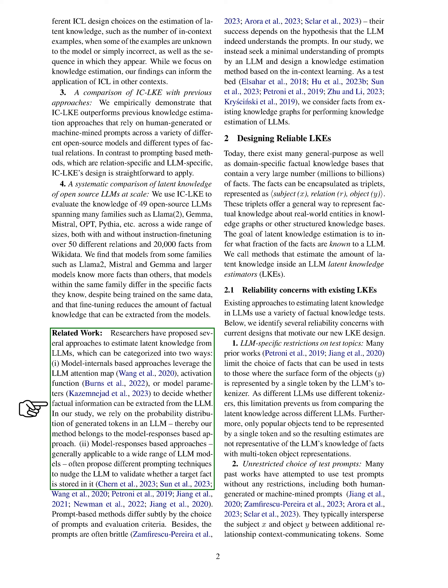Model responses-based approaches often use different prompting techniques to verify if a target fact is stored in the LLM. However, these prompts can be fragile and their success relies on the assumption that the LLM truly understands them. In our study, we aim to minimize the LLM's understanding of prompts and develop a knowledge estimation method based on in-context learning, testing our method using facts from existing knowledge graphs.